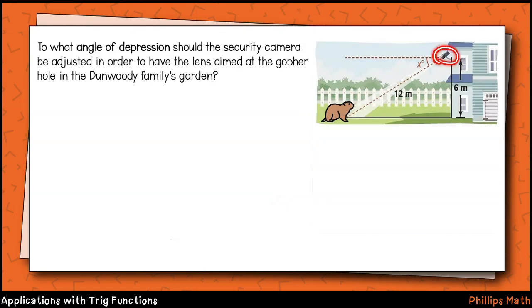Let's look at a different one. We have a home security camera on the side of a house here, and we want to position the camera so that we can track down this gopher who's been destroying the Dunwoody family's garden. We want to tilt the camera downward to see the ground so that we're solving for the angle of depression. Since the eyeline of the camera is parallel to the ground, we have an old friend hiding here. Did you spot the alternate interior angle? The angle of depression is equal to the acute base angle of this triangle.